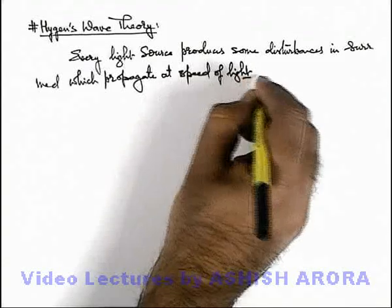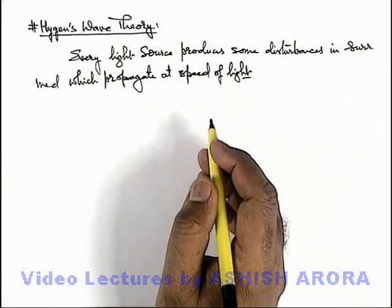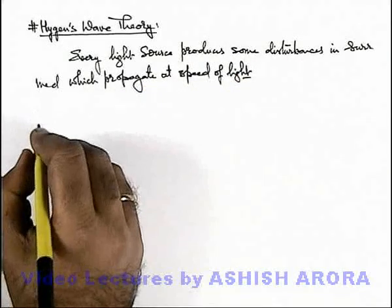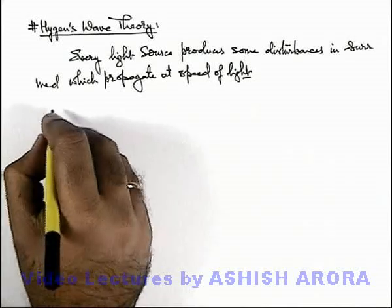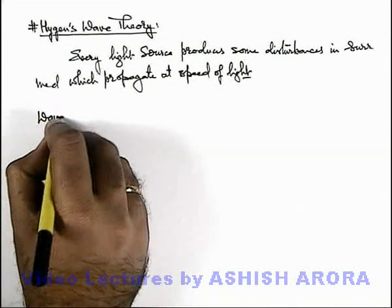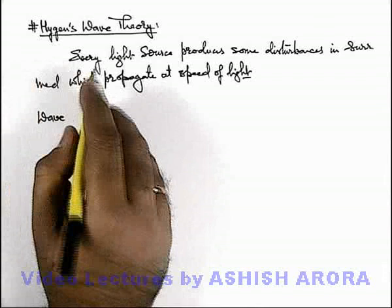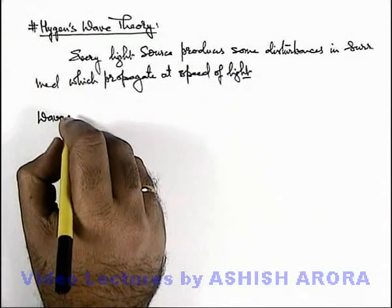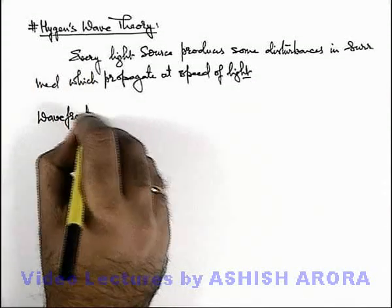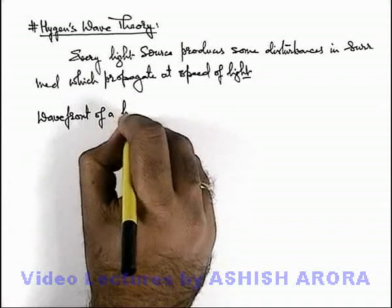These disturbances we term as light waves, and the phenomenon of wave propagation was explained in terms of wave front. So Huygens defined a specific term — that is wave front — of a light beam.